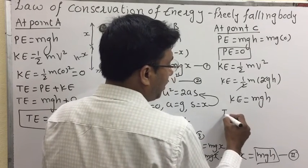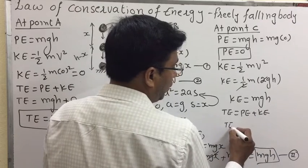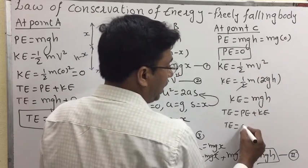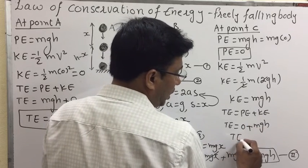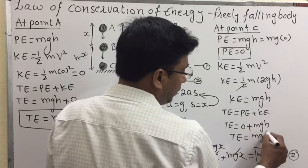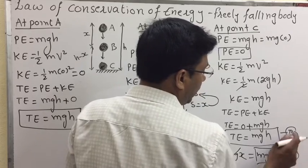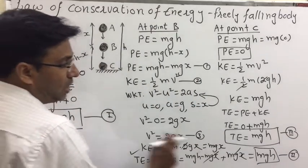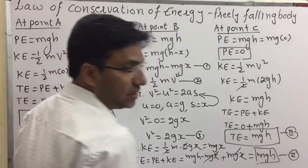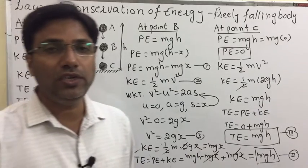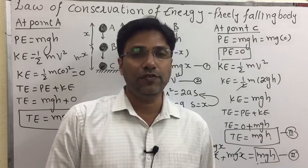Total energy at point C equals potential energy plus kinetic energy, which is zero plus mgh, giving mgh. This is equation number three. Looking at equations one, two, and three, we get mgh, mgh, and mgh — the total energy is constant in the case of a freely falling body. This topic is very important for intermediate first year examinations.